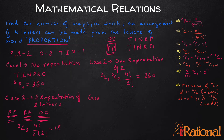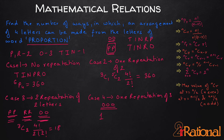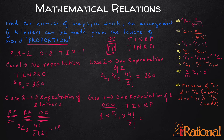Case 4 — one triple repetition: only O appears 3 times, so there is 1 way to select that group. We still need 1 more letter, chosen from T, I, N, R, P — 5 options, giving 5C1 ways. Arrangement of the 4 letters (with O repeated 3 times) = 4 factorial divided by 3 factorial = 4. Total for case 4: 1 × 5C1 × 4 = 20 ways. Adding all cases: 360 + 360 + 18 + 20 = 758 ways.